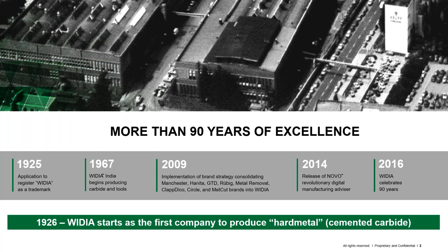We started as the first ones to produce carbide and registered the trademark in 1925, receiving approval in 1926. We really started to produce in essence in a lab hard metal - cemented carbide. The first year we produced around one ton. From that starting point it was spread around the world. We gave away licenses so others could produce this kind of material. We also started in 1967 with production in India. In 2009 we began a new strategy implementing other brands to make a complete different WIDIA than known before.